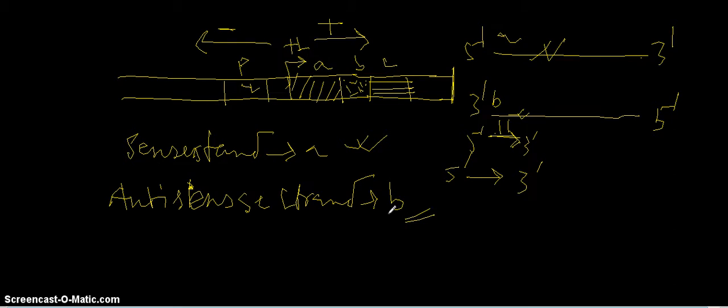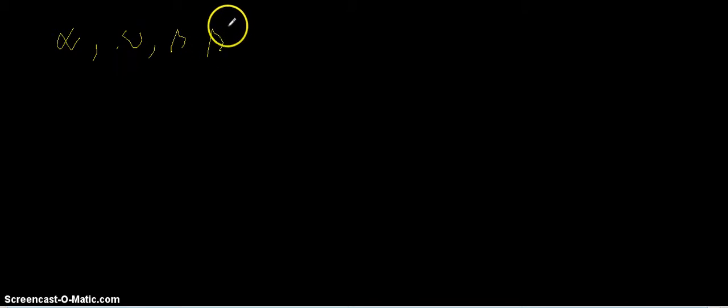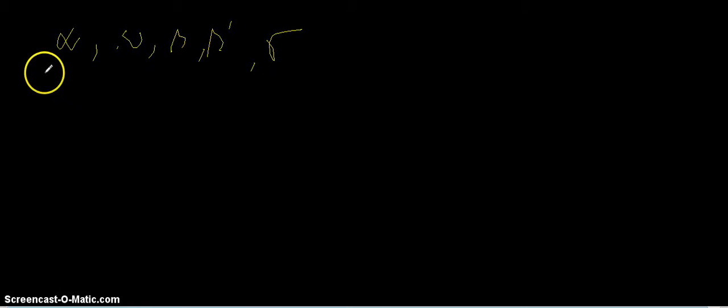For mRNA, tRNA, and rRNA — these three typical RNAs — in case of prokaryotes only a single RNA polymerase is responsible for all three. Whereas in case of eukaryotes there are three different RNA polymerases, one for each type, and we will discuss everything later. Now for this RNA polymerase, there are subunits: alpha, omega, beta, beta prime, and sigma.